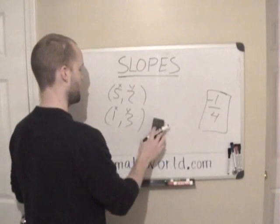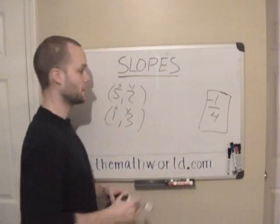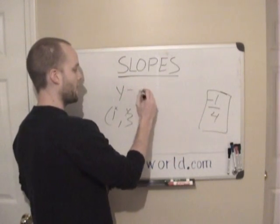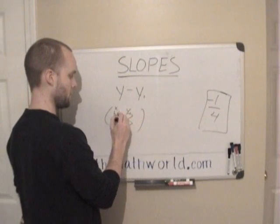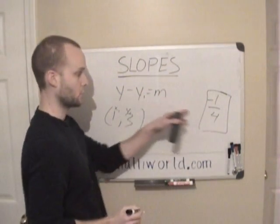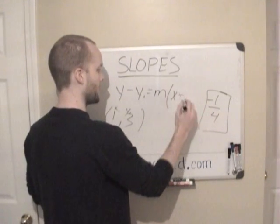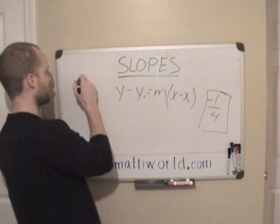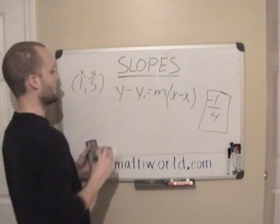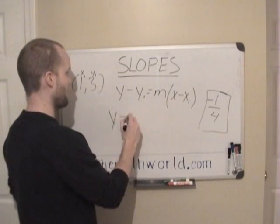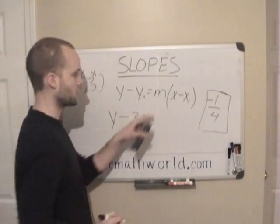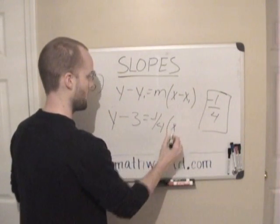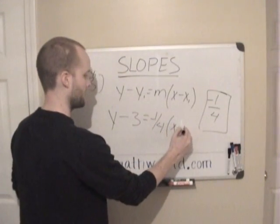And we're going to use that, and all we need to find the actual equation is one of these points. I'm just going to use (1, 3), it doesn't matter which one you use. And all you're going to do, you're going to do y minus y1 equals m, which is our slope, times x minus x1. And this is our equation right here. So then all we have to do, x1, y1, all we have to do is plug in our numbers. So we have y minus 3 is equal to our slope, which is negative 1 fourth times x, and then we have 1 here, so minus 1.